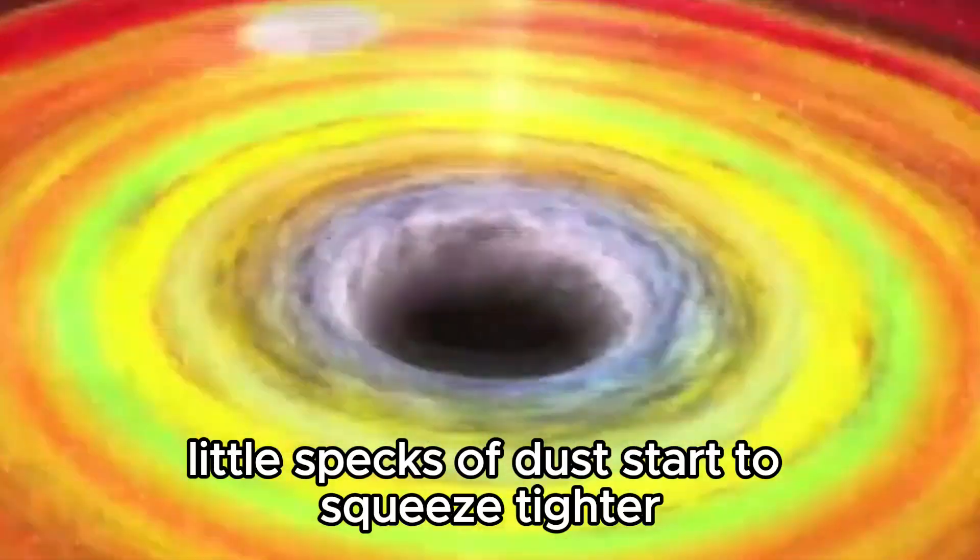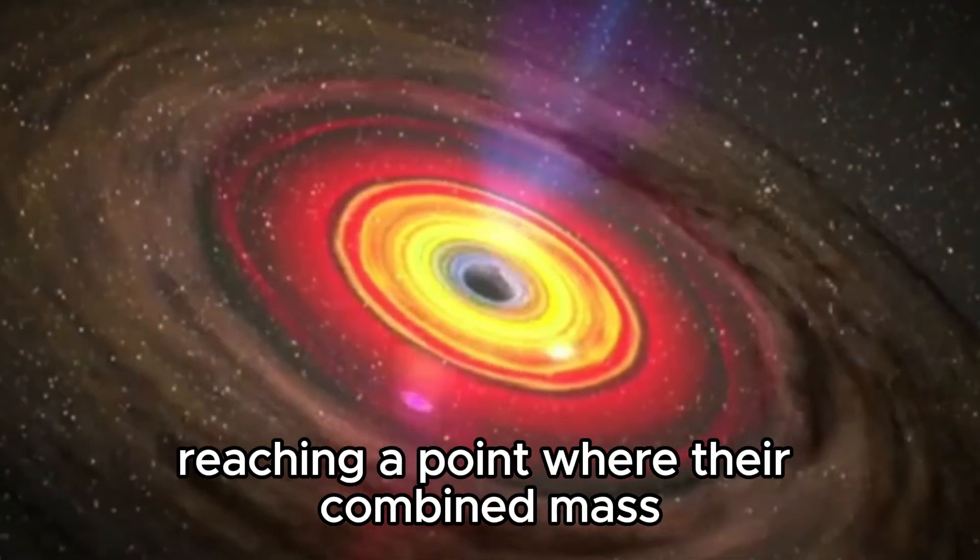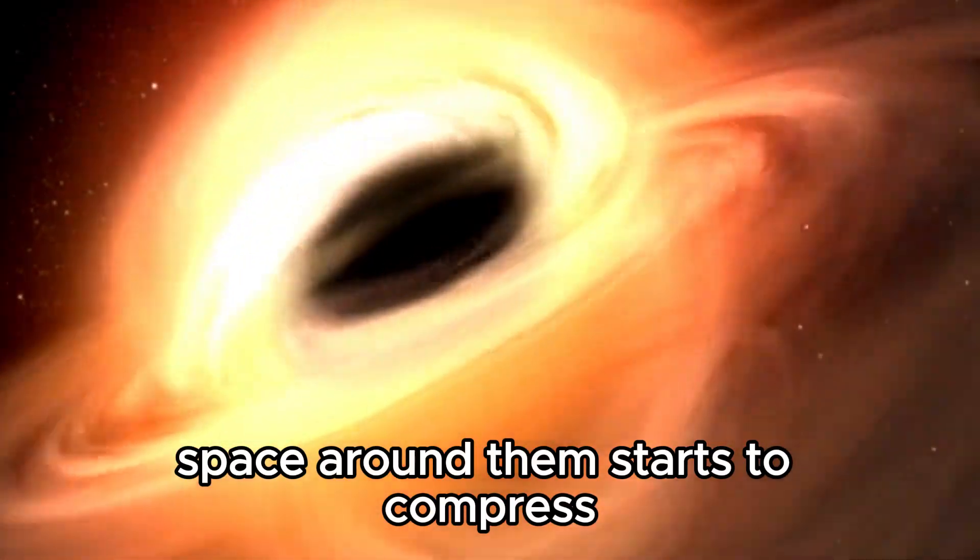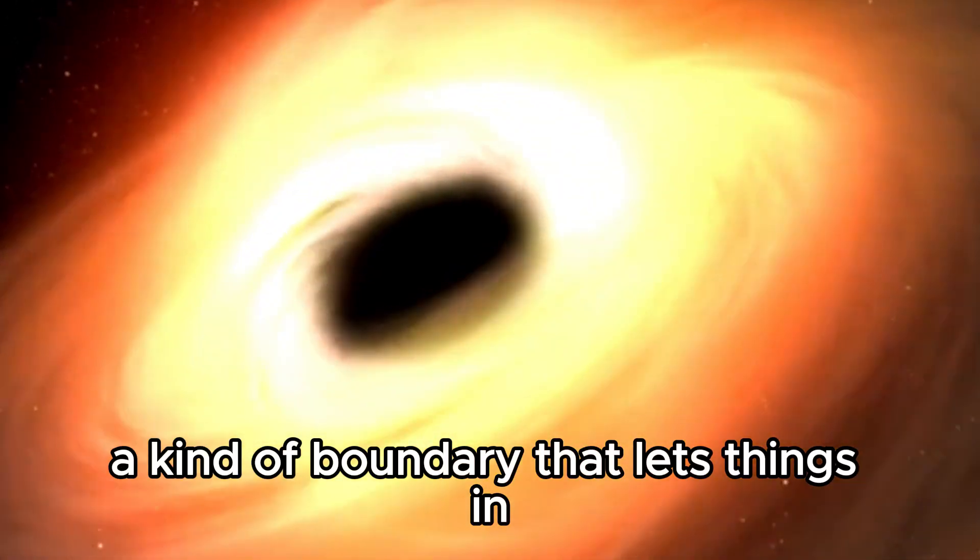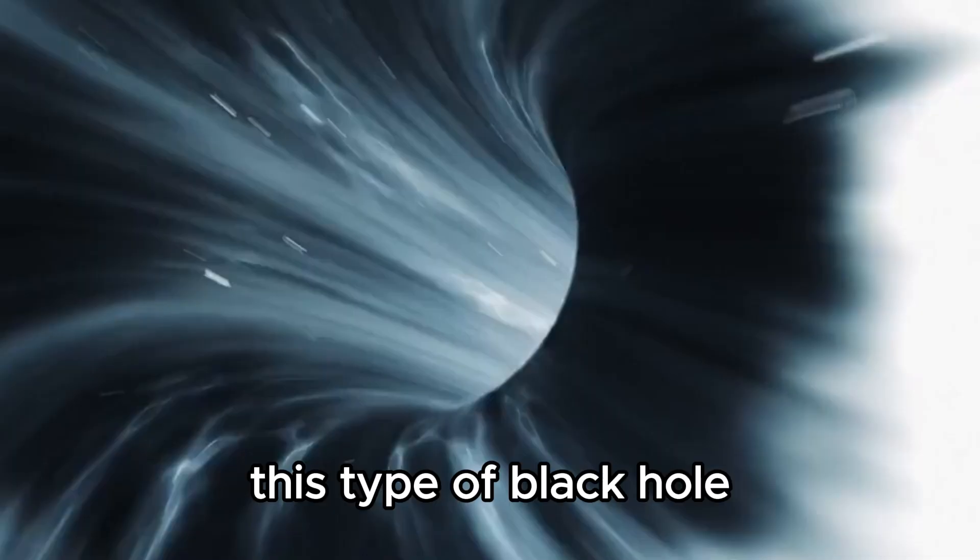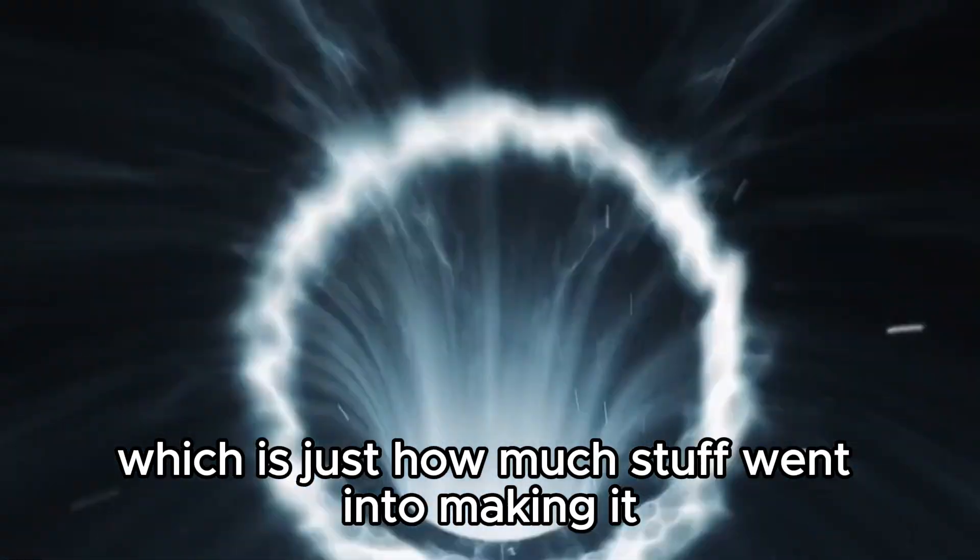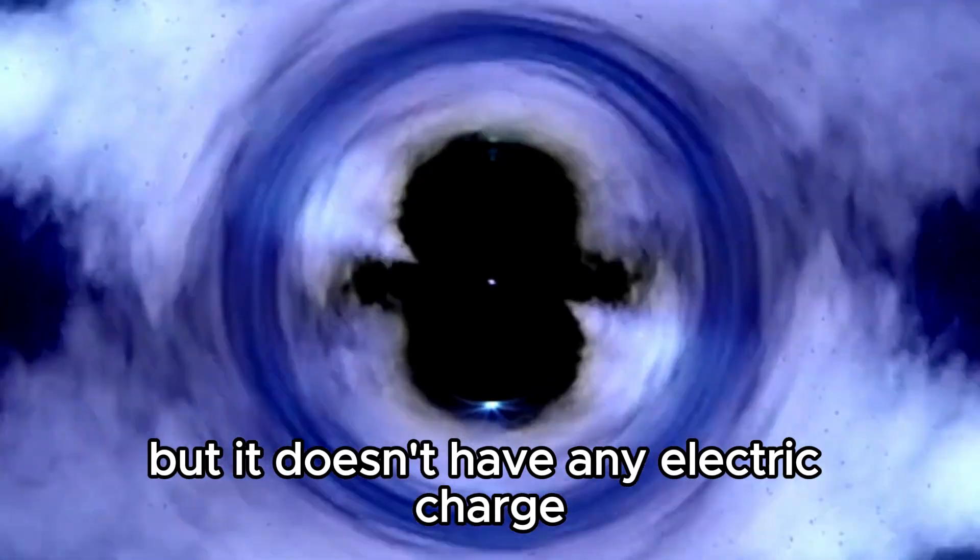Over time, little specks of dust start to squeeze tighter and tighter, eventually reaching a point where their combined mass and gravity grow so intense space around them starts to compress. This creates an event horizon, a kind of boundary that lets things in but doesn't really allow anything to get out. This type of black hole is called a Schwarzschild black hole. It has mass, which is just how much stuff went into making it, but it doesn't have any electric charge or spinning motion.